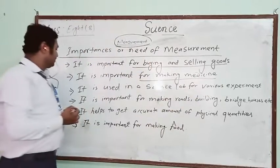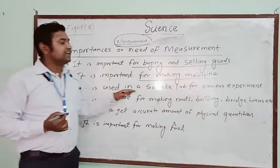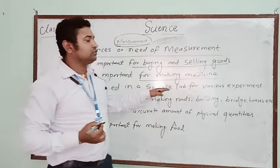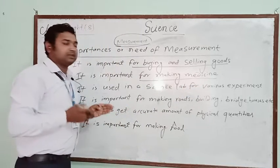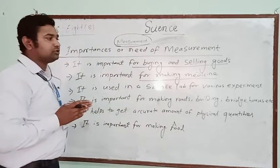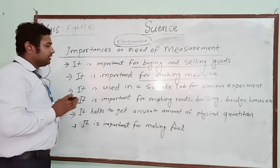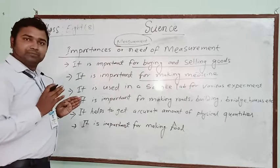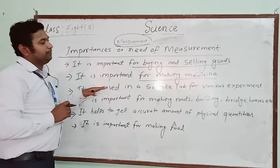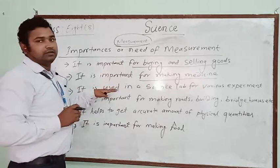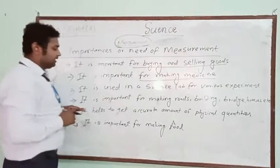The next importance is that measurement is used in a science lab for various experiments and to make different types of chemicals. In the science lab, measuring is also very important.